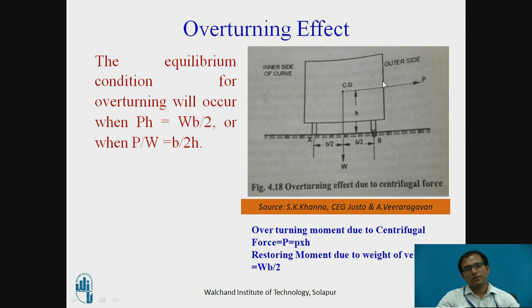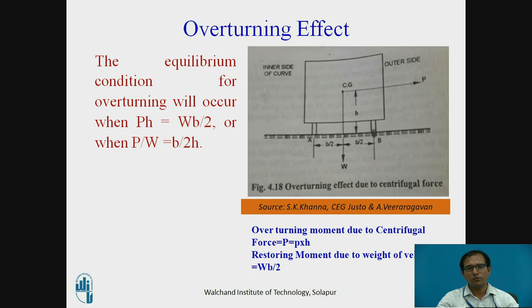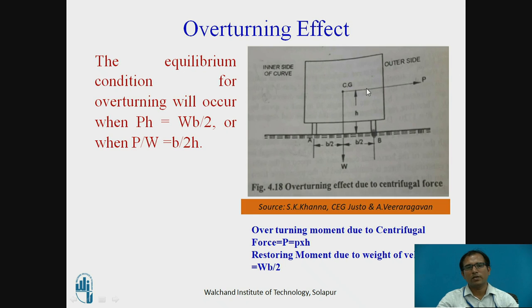The first effect is the overturning effect. Due to the centrifugal force, the vehicle may overturn on the outer side about outer wheel B. Let H be the height from the road surface to the CG of the vehicle, and B be the width of the wheelbase. The overturning moment about outer wheel B is P × H. To resist this, we have the restoring moment due to the weight of the vehicle, that is W × B/2. For equilibrium, P·H = W·B/2, or P/W = B/2H. When the centrifugal ratio P/W attains or exceeds the value B/2H, there is a chance the vehicle may overturn on the outer side.